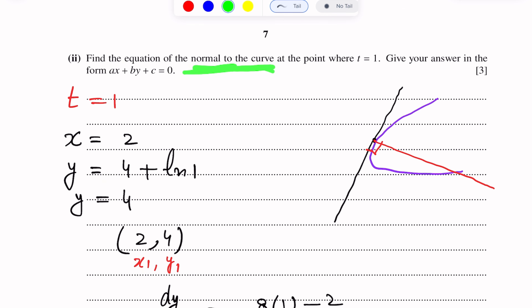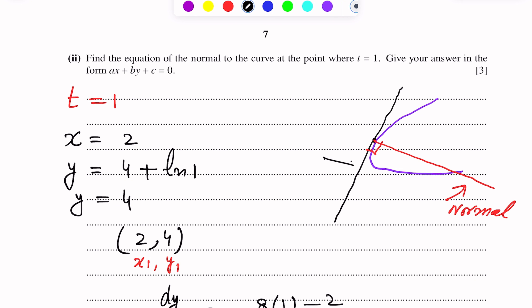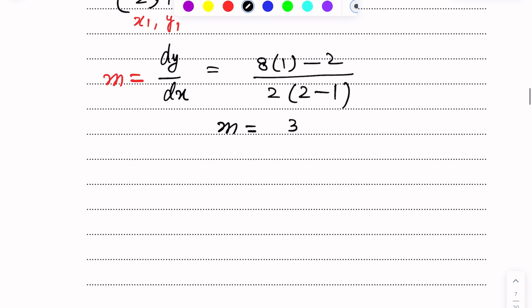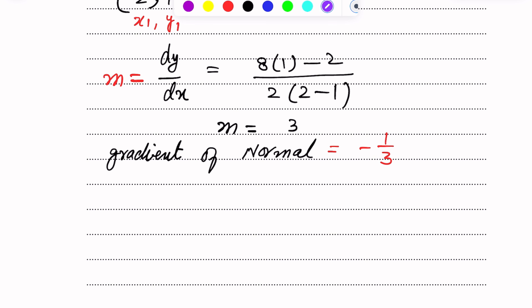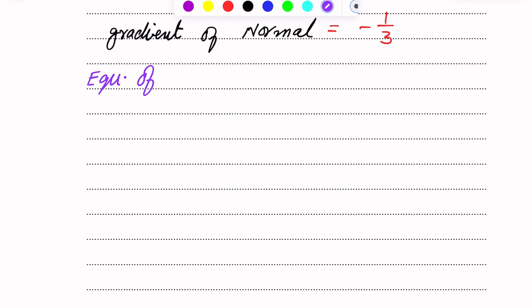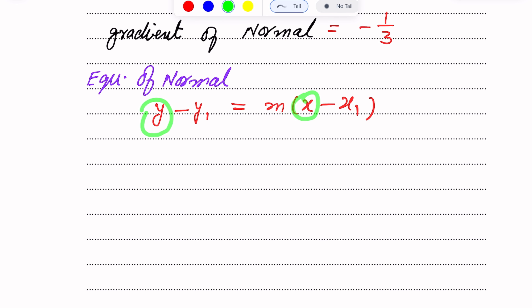However, we need to find the equation of the normal, not the tangent. The gradient of the normal is the negative reciprocal of the gradient of the tangent. Since the gradient of the tangent is 3, the gradient of the normal = negative 1 over 3. Now we use the equation: y minus y1 = m(x minus x1), with gradient = -1/3.